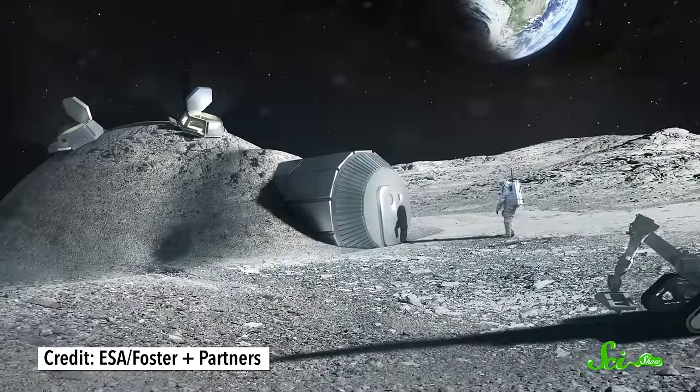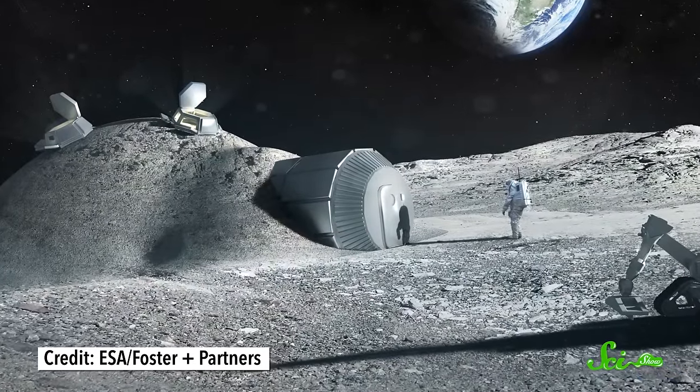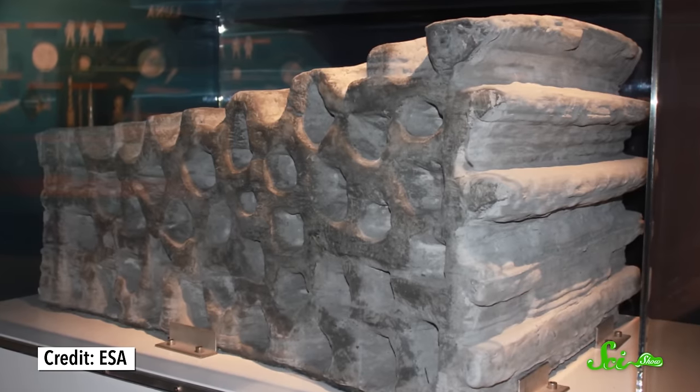It might sound like something out of a science fiction novel, but researchers are already developing designs for printable structures that would protect against radiation and small meteoroids. To prove that it's possible, they've already printed a 1.5 metric ton building block made out of synthetic regolith. So the first Moon colonists might live and work in a 3D-printed town.